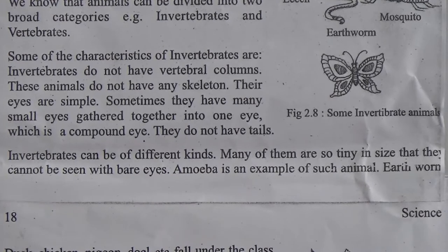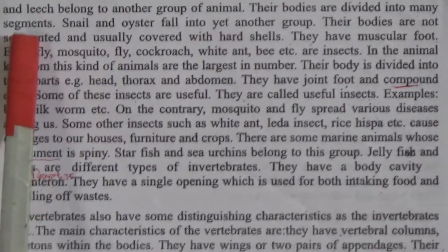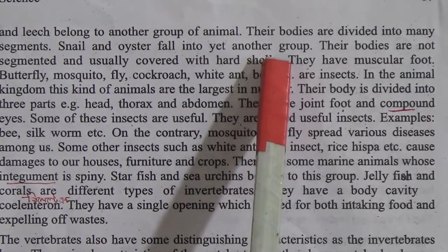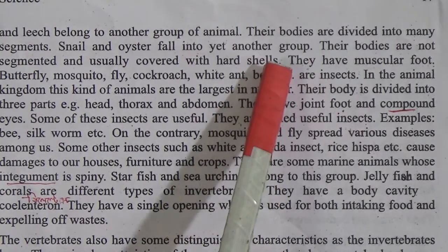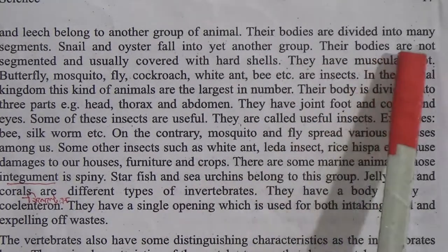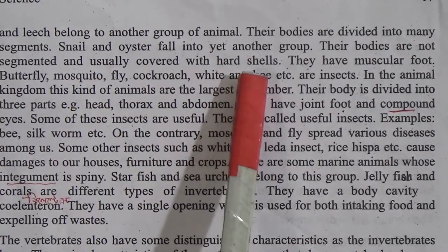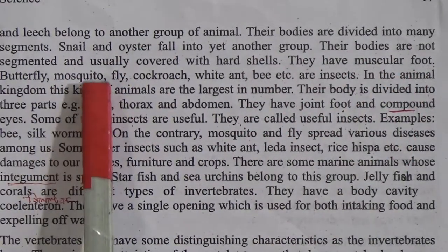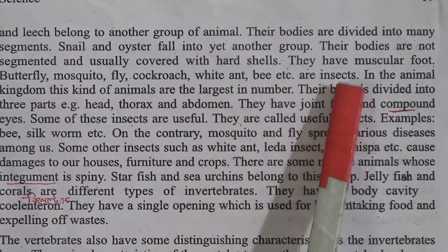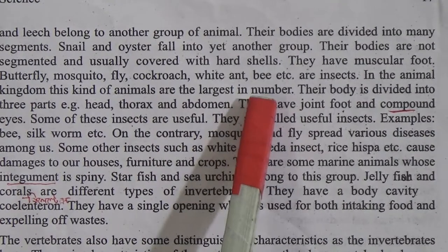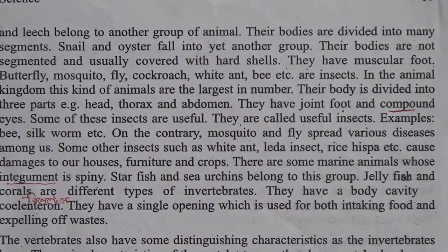Earthworms and leeches belong to another group of invertebrates whose bodies are divided into many segments. Snails and oysters fall into yet another group — their bodies are not segmented and are usually covered with hard shells; they have a muscular foot. Butterfly, mosquito, fly, cockroach, white ant, bee, etc. are insects. In the animal kingdom, insects are the largest group in number. There are lots of insects around us.